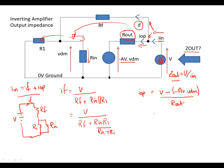Again, that's quite straightforward. Double negative inside here, so we can tidy that one up. V plus Av Vdm, all over Rout.